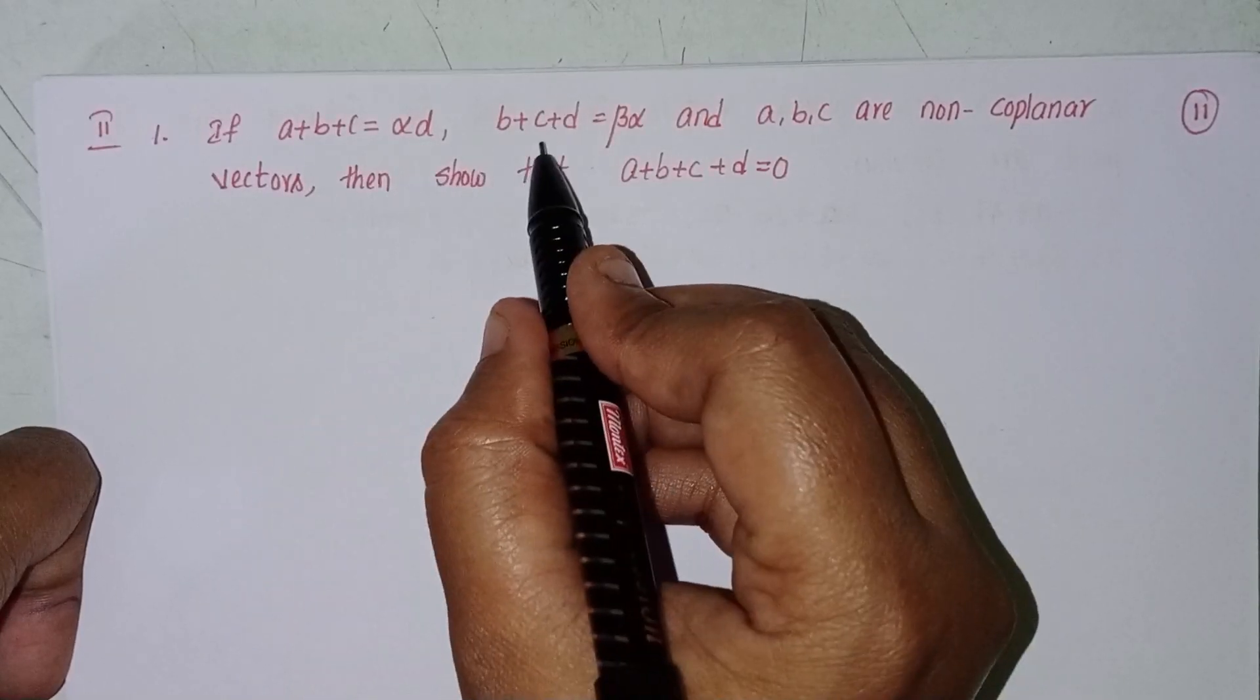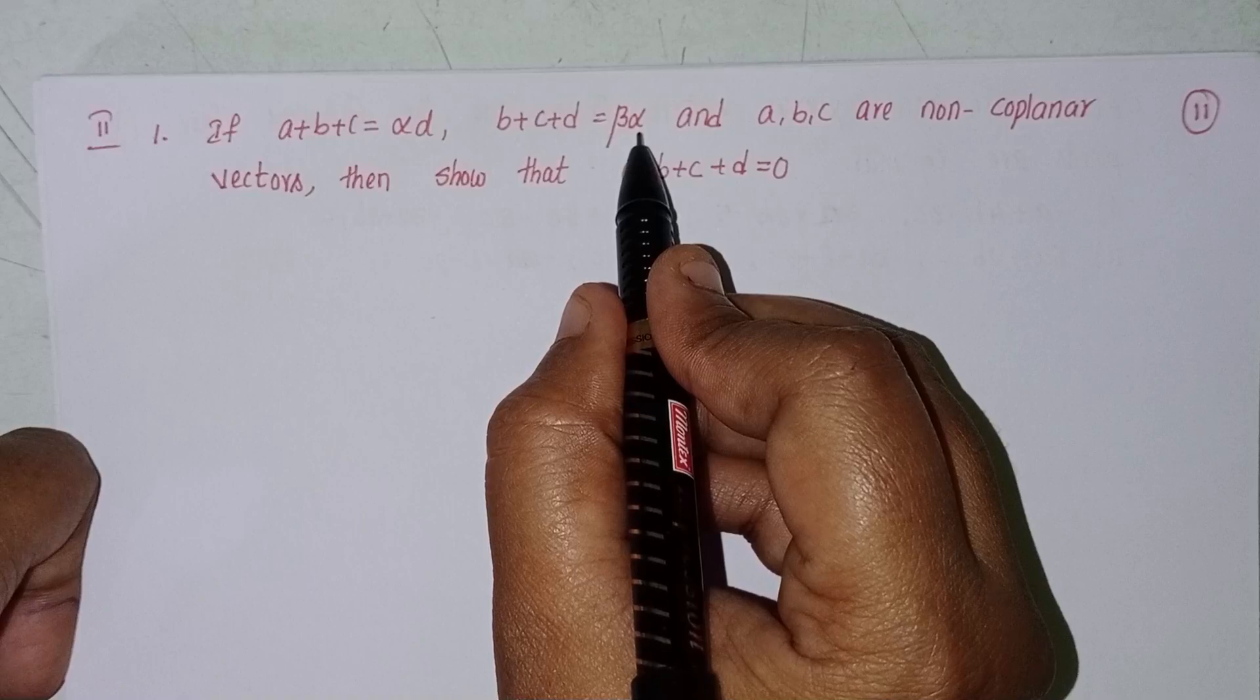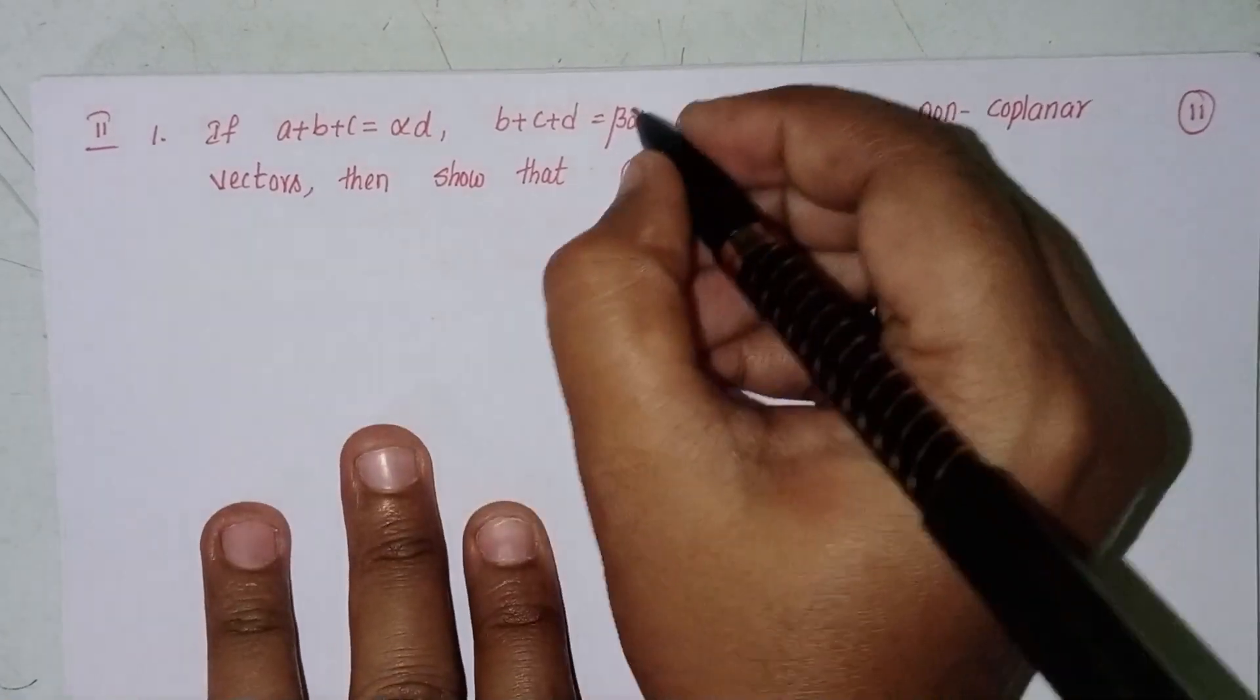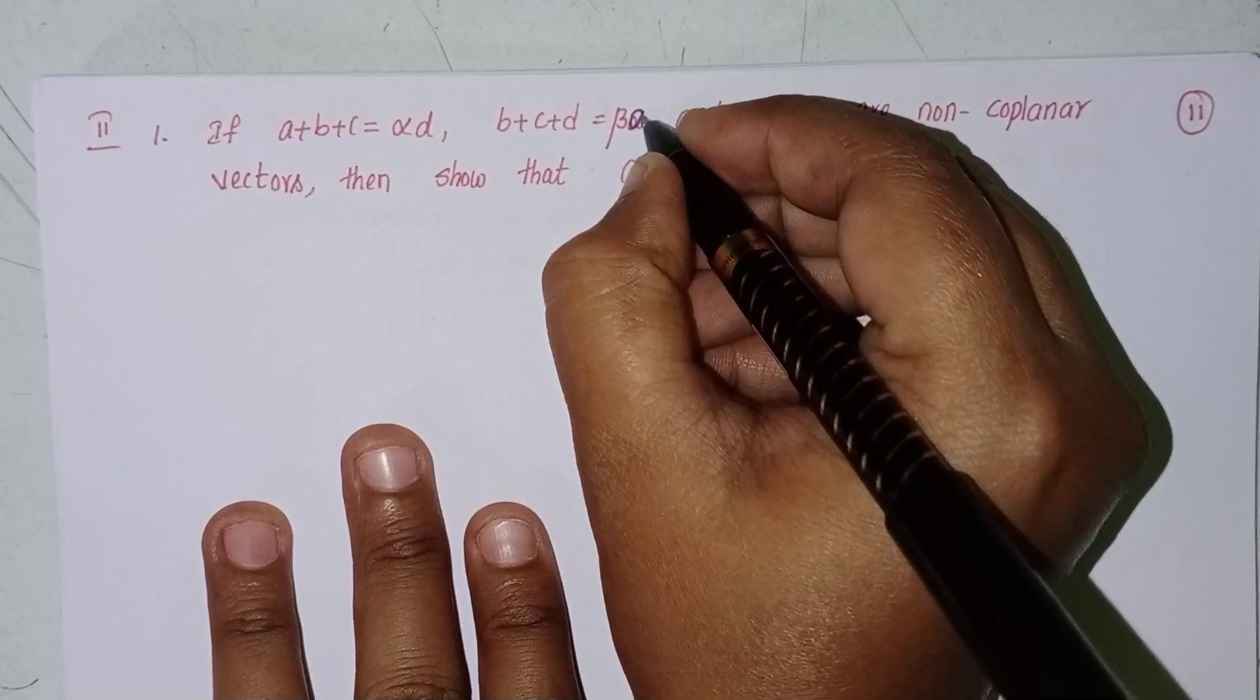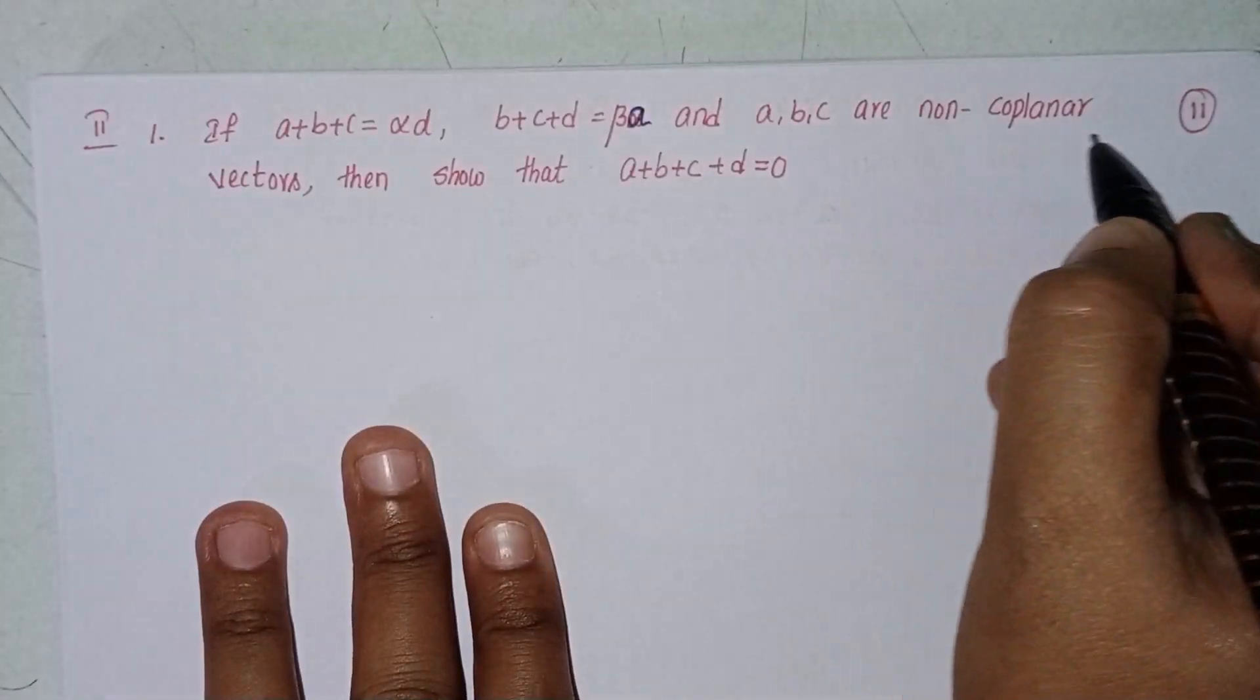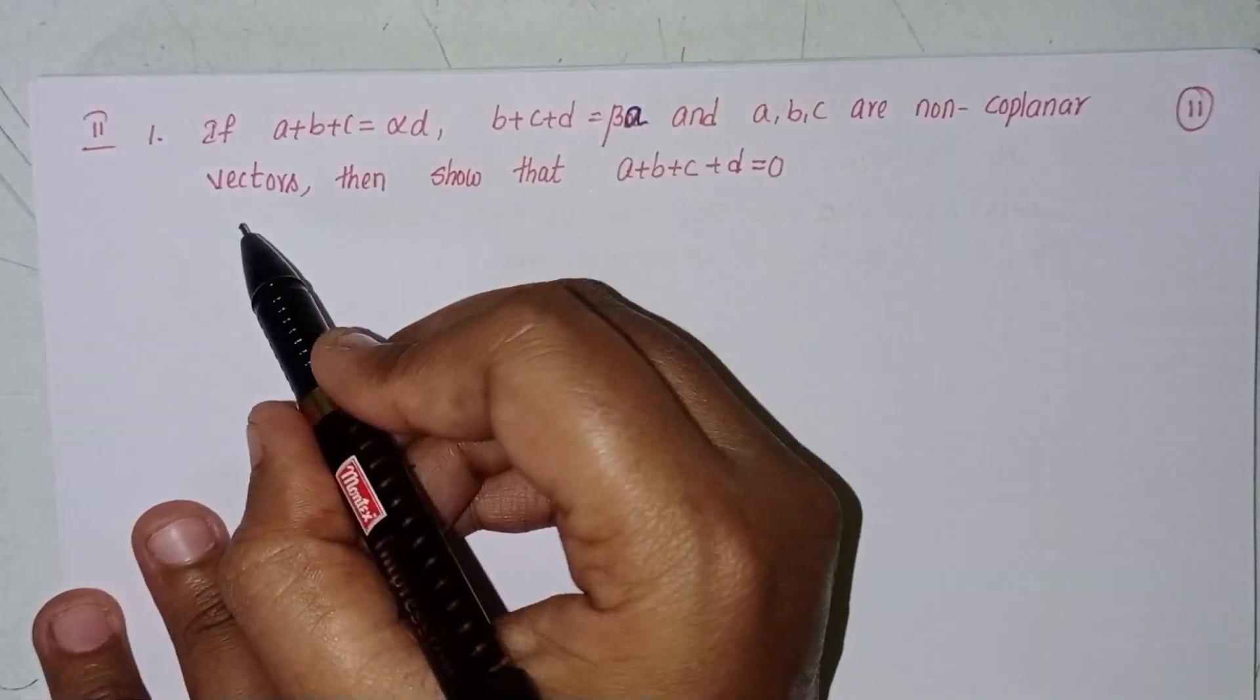Sorry, this is a... and a, b, c are non-coplanar vectors, then show that a plus b plus c plus d equal to zero.